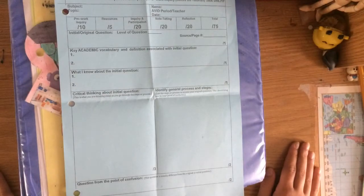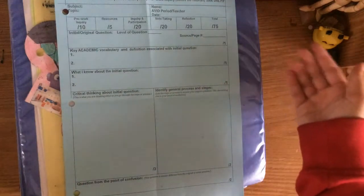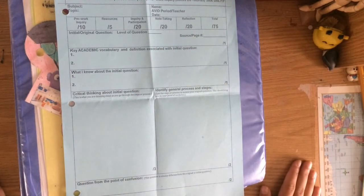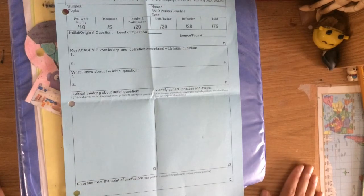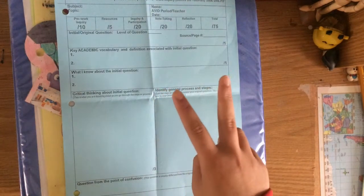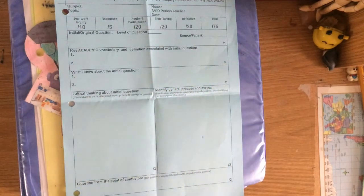The next part of a binder check is checking your TRFs. This is a TRF. TRF stands for Tutorial Request Form. Two of them will be handed back to you on Monday from the week before.